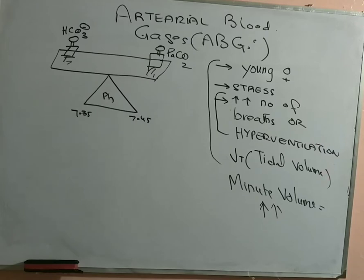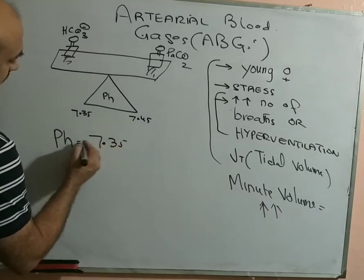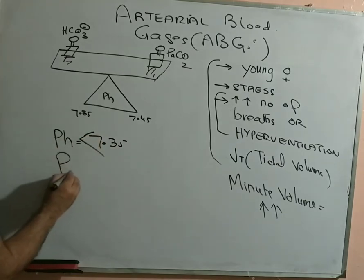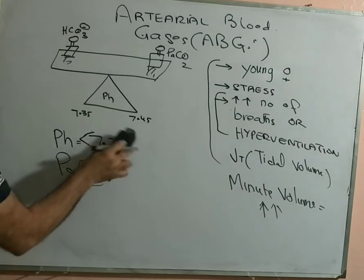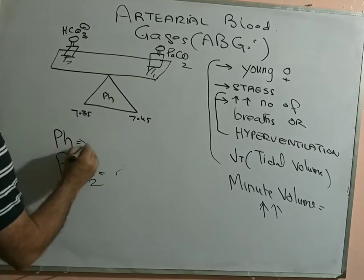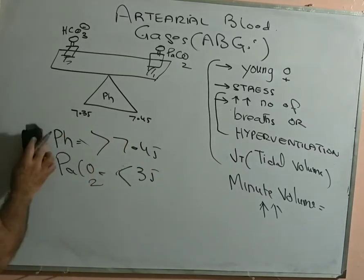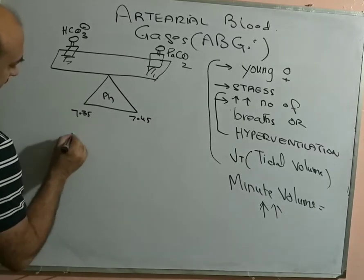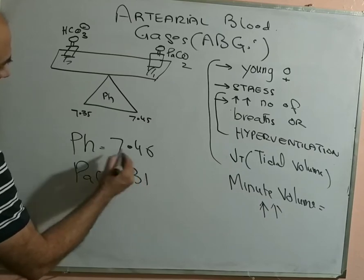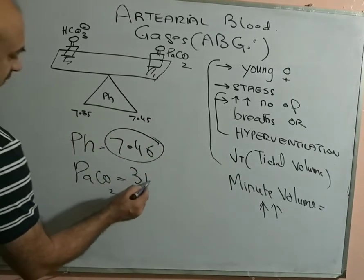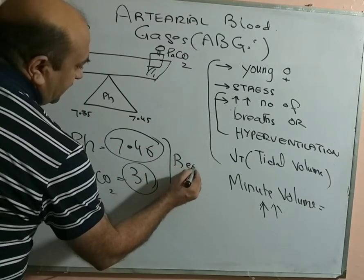In case of respiratory alkalosis, pH is more than 7.45 and pCO2 is less than 35 — that is respiratory alkalosis. For example, if pH is 7.46 and PaCO2 is 31: when pH goes more than 7.45 we call it alkalosis, and when pCO2 goes less than 35 we call it alkalosis. So this is respiratory alkalosis.